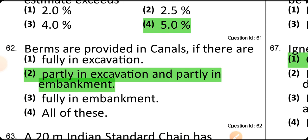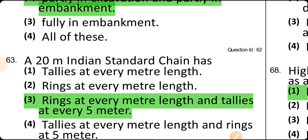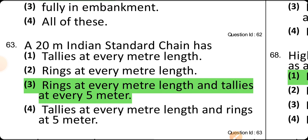Berms are provided in a canal if it is partly in excavation and partly in embankment. A 20-meter Indian standard chain has rings at every meter length and tallies at every 5 meters.